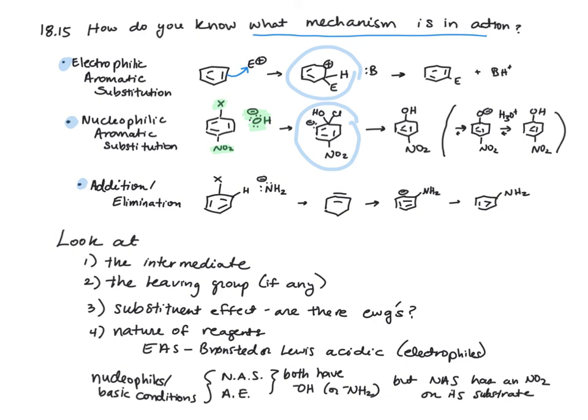In addition-elimination, we also have a good leaving group and a strong base. But now we don't have an electron withdrawing group. That's why we end up going through our benzyne intermediate, which is missing its pi bonds.